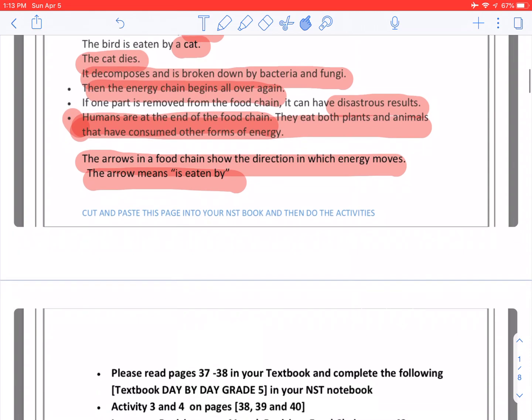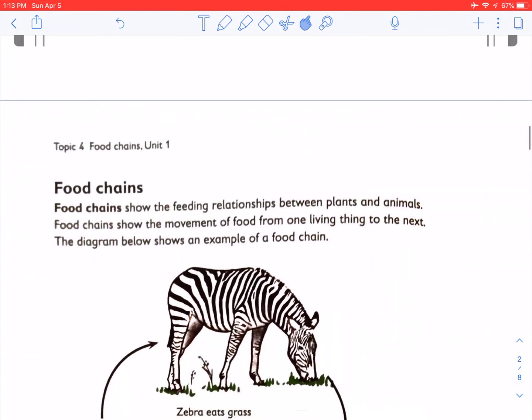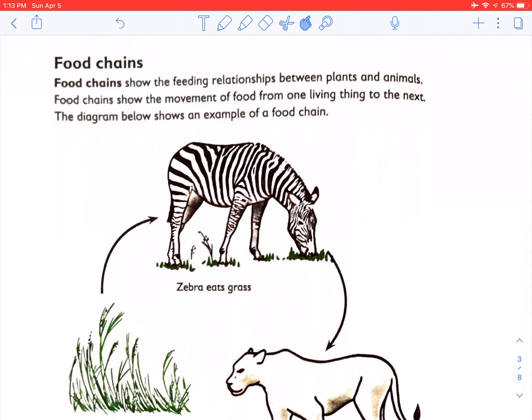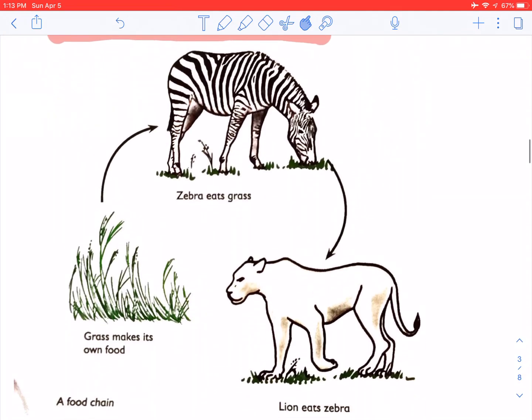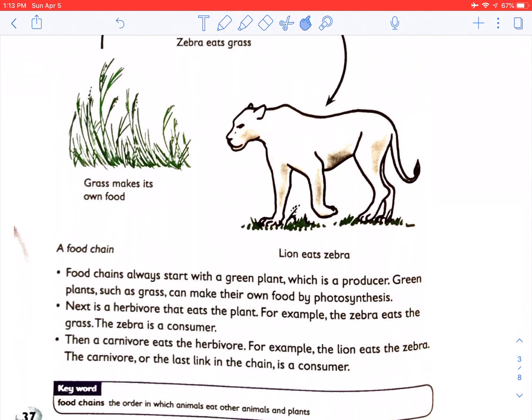Let's go to our textbook on page 37. It gives a very nice explanation of food chains. Food chains show the feeding relationship between plants and animals. Food chains show the movement of food from one living thing to the next. The diagram below shows the example of a food chain. So the grass makes the food. The zebra eats the grass and the lion eats the zebra. A food chain always starts with a green plant, which is a producer. Green plants such as grass can make their own food by photosynthesis.